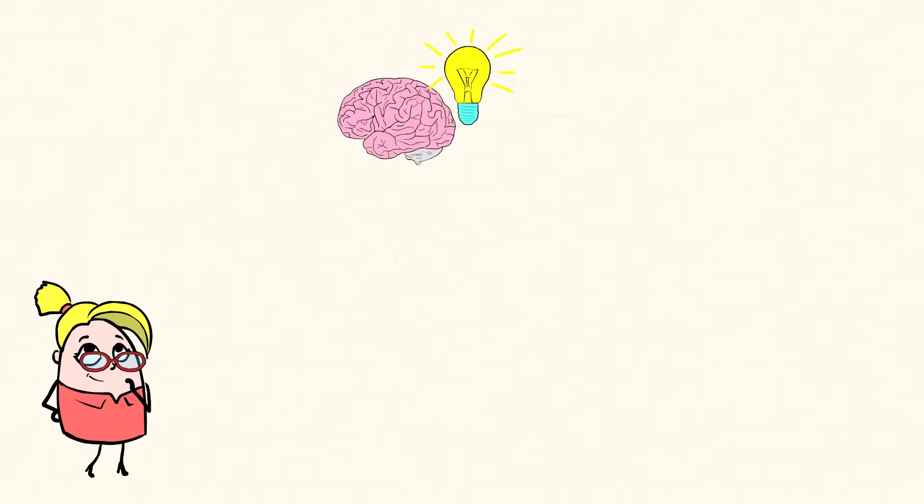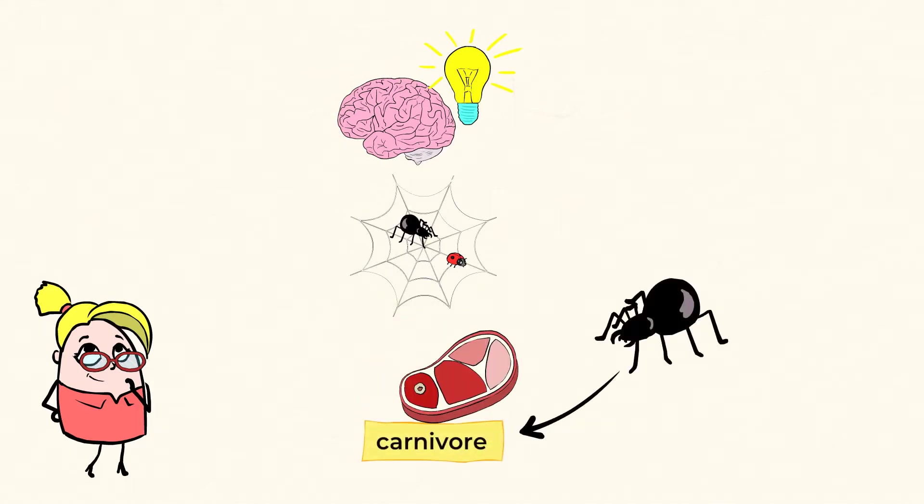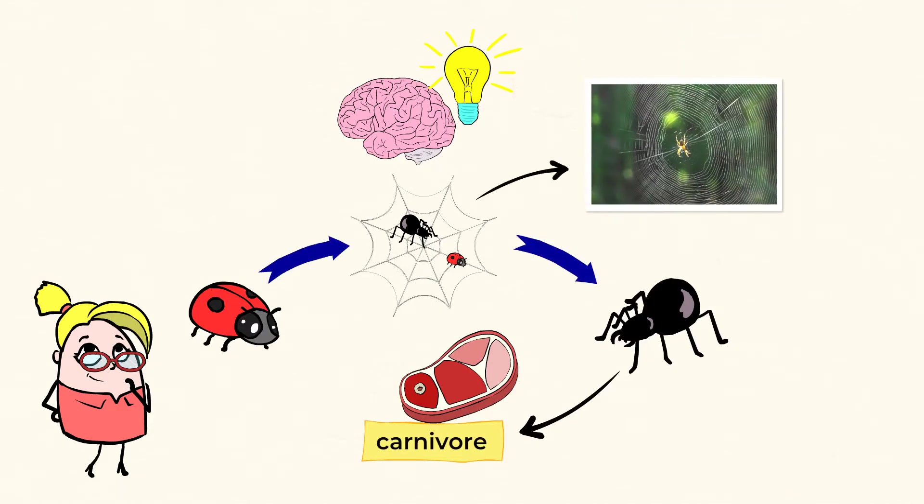While most carnivores are hunters, some have to be more creative in the ways they get their food. Some carnivores trap their food. Most spiders are in the carnivore family because they eat insects. Spiders spin their webs in order to catch their prey.